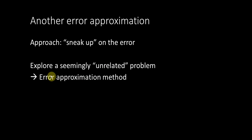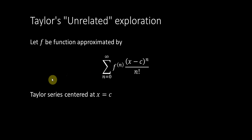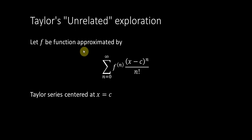We're going to start out with a problem that looks kind of unrelated and seems totally random and off track, but then I will show you how it converges to the solution we're aiming for — pardon the pun. This unrelated problem will ultimately lead us to another error approximation method. This is Taylor's so-called 'unrelated' exploration. There's really no good explanation for why these mathematicians started out this way — it's part of their genius.